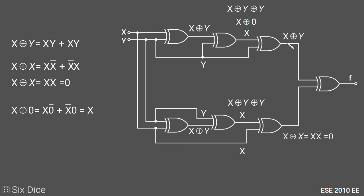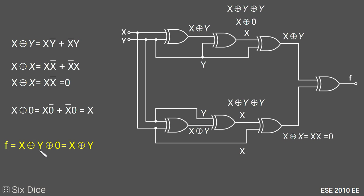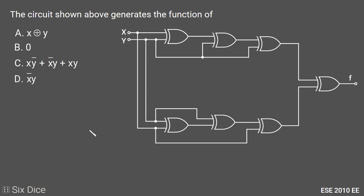The final gate is also an XOR gate with inputs x XOR y and zero. So f = (x XOR y) XOR zero. XORing with zero does not change the function, so x XOR y XOR zero simplifies to x XOR y. Therefore the answer to this question is option A.